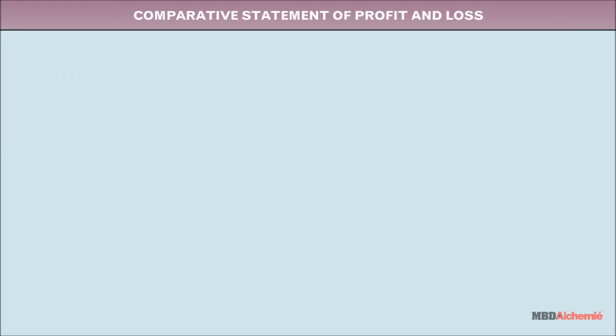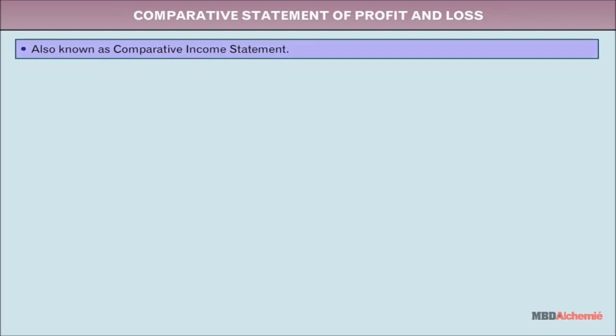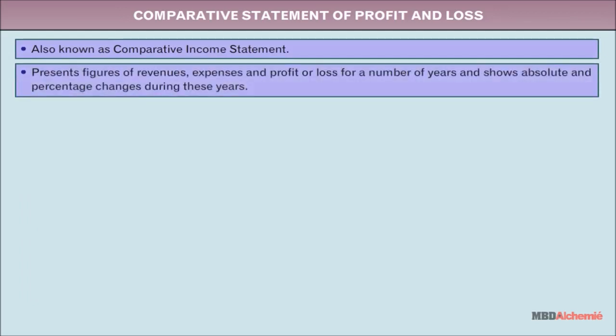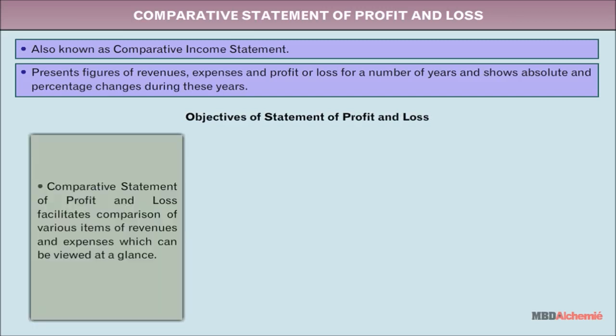The comparative statement of profit and loss, also known as the comparative income statement, presents figures of revenues, expenses, and profit or loss for a number of years and shows absolute and percentage changes during these years. It facilitates comparison of various items of revenues and expenses which can be viewed at a glance.